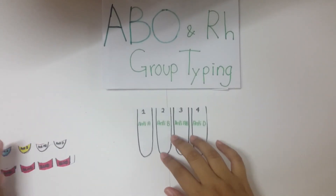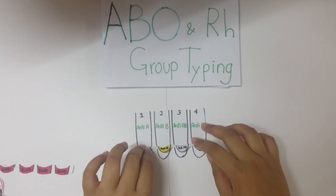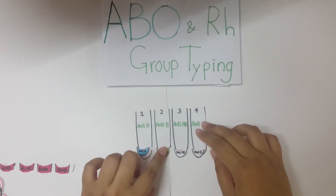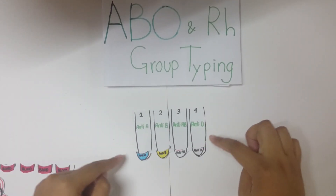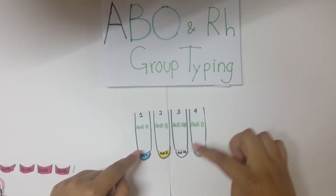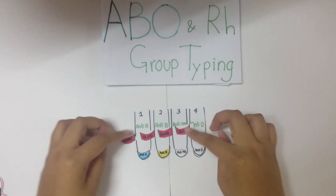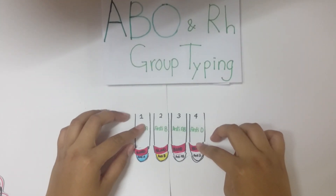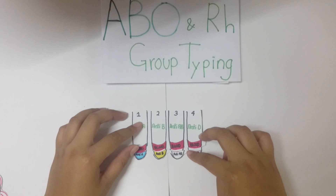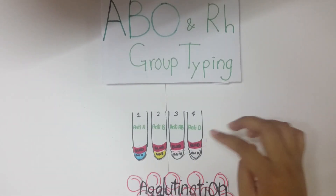The first thing is you put into each of the test tubes the reagent — which is the reagent of NT-A, NT-B, NT-AB, and NT-D. After that, you will put a drop of the patient's blood and observe for agglutination.